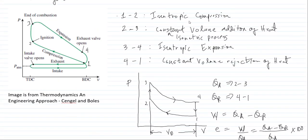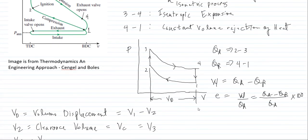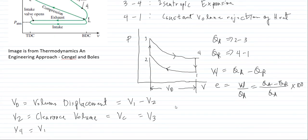What you need to remember is that you must memorize the processes, because the process will dictate the formula to be used. Process 1 to 2 is isentropic compression; then constant volume addition of heat; then isentropic expansion; then constant volume rejection of heat from process 4 to 1. Remember: work equals Q_A minus Q_R, and efficiency equals work divided by Q_A.